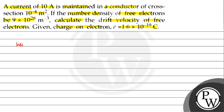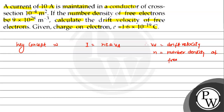This is the key concept — the relation between current and drift velocity. The formula is I equals nAeVD. Here VD is the drift velocity, n is the number density of free electrons, and A is the area of cross section.